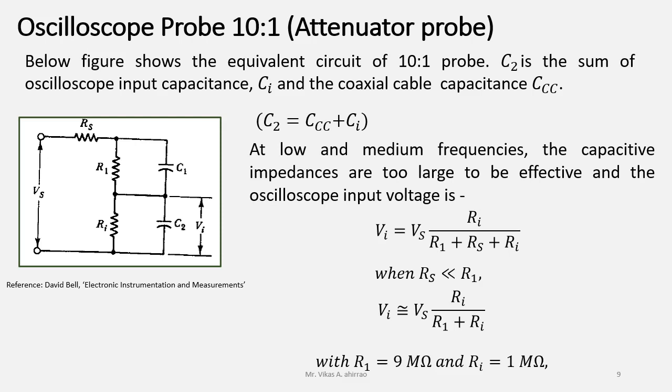With R1 equals 9 megaohm and Ri equals 1 megaohm, the value of voltage at the input terminal of oscilloscope becomes Vi equals Vs upon 10. This equation shows that whatever voltage that we are going to measure or it is under test that voltage will be getting divided by a factor of 10.